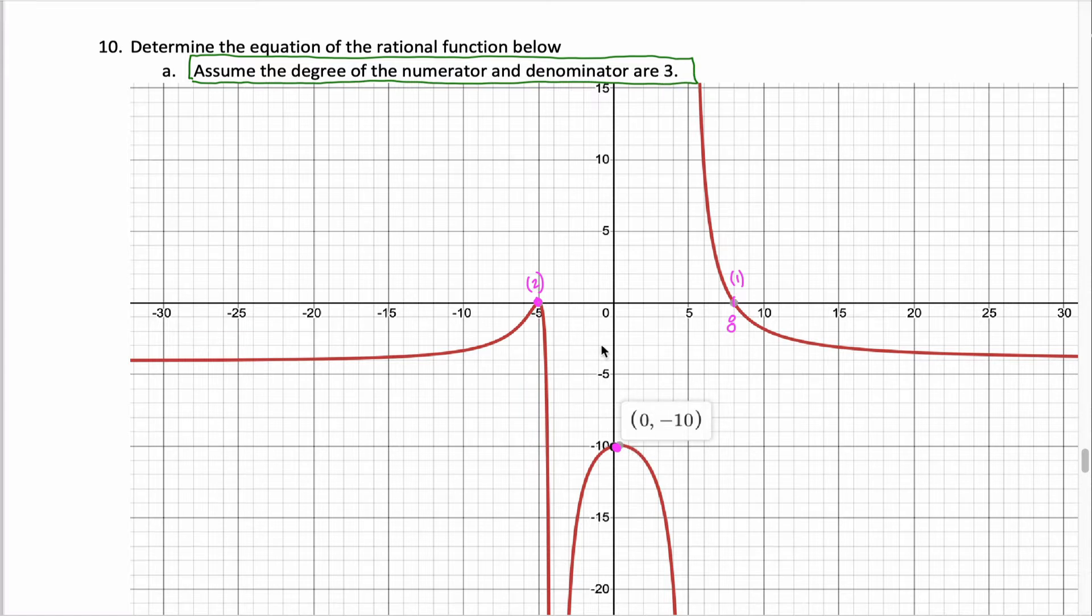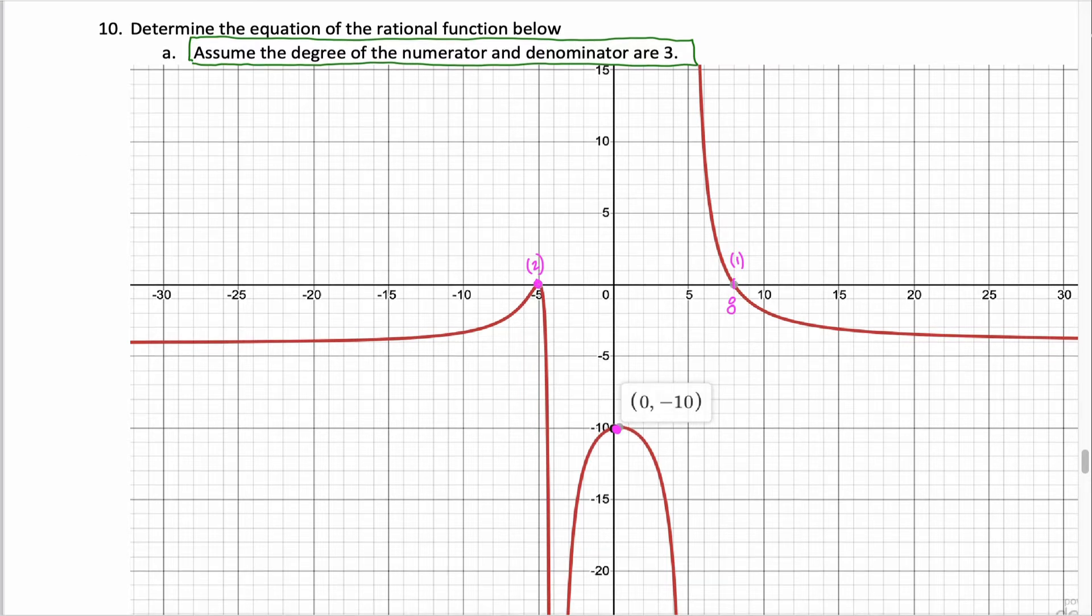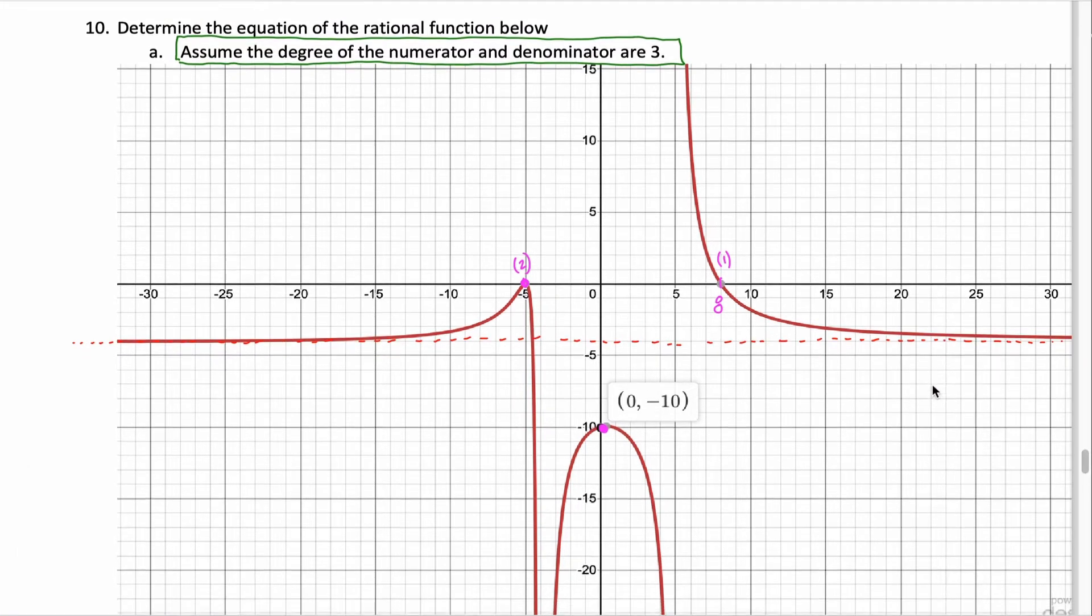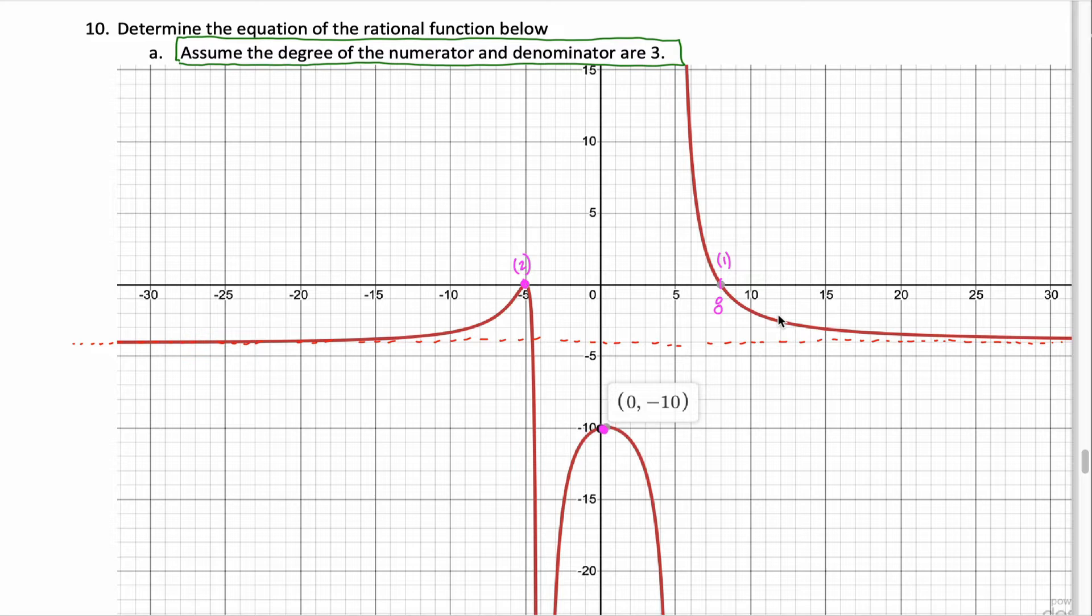We got the y-intercept. We got the x-intercepts. What does that leave? Well, two pieces of information. It leaves the end behavior. In this case, it looks like we have a horizontal asymptote. It can be a little bit tough to gauge the horizontal asymptote just by looking at the graph, but it looks like in this case, our horizontal asymptote is at y equals negative 4.